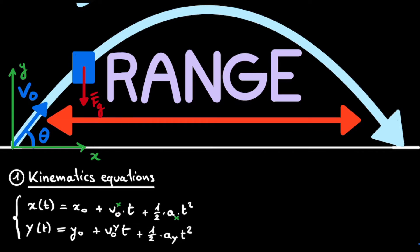We can already reduce these equations quite a bit. We say that we start out at the origin of our coordinate axis, meaning that x₀ and y₀ can be set to zero. Also, because there will not be an acceleration in the x direction, the a_x term drops out, and as a consequence, the entire quadratic term drops out. For the acceleration in the y direction, we know it will be due to gravity, so a_y will simply be equal to minus g, the gravitational acceleration in the negative y direction.